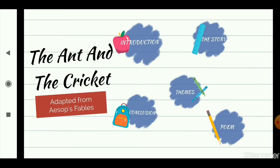Now who was Aesop? Aesop was an ancient Greek storyteller. He was a writer who wrote a lot of children's stories or fables as we call them. In the video I will explain what fables actually mean. For now let's move on to the introduction of the poem.